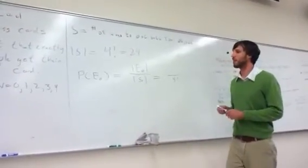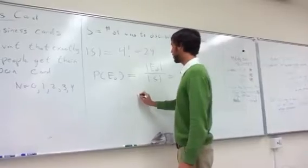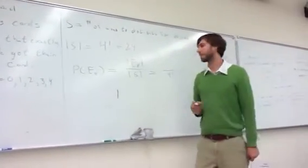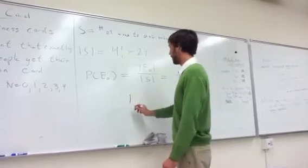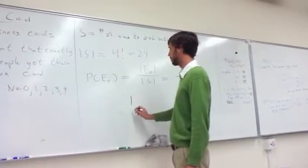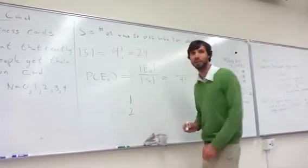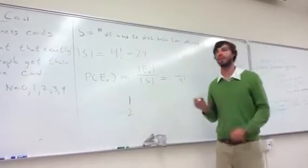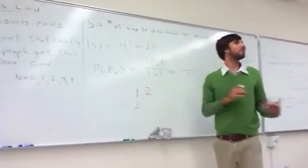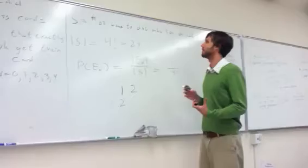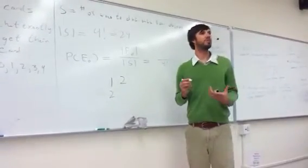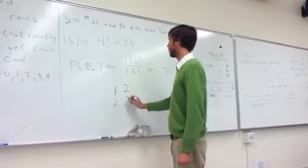Then you can argue as follows: let's consider some option where person one does not get their own card. So person one has three options of which card they can get which is not their own. Let's say they got person two's card. Then person two, once person one chooses person two's business card, person two still has three options to choose from. Let's say they choose number three.